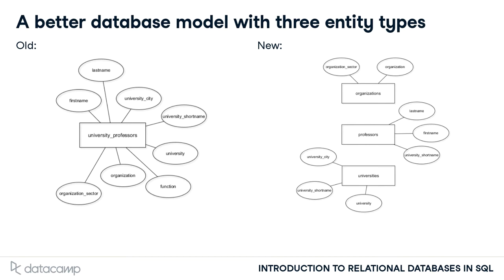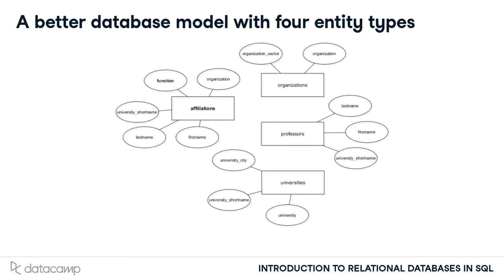This reduces redundancy, as professors need to be stored only once. Note that for each professor, the respective university is also denoted through the university shortname attribute. However, one original attribute – the function – is still missing. This database contains affiliations of professors with third-party organizations, and the attribute function gives some extra information to that affiliation. For instance, somebody might act as a chairman for a certain third-party organization. So the best idea is to store these affiliations in their own table, connecting professors with their respective organizations where they have a certain function.